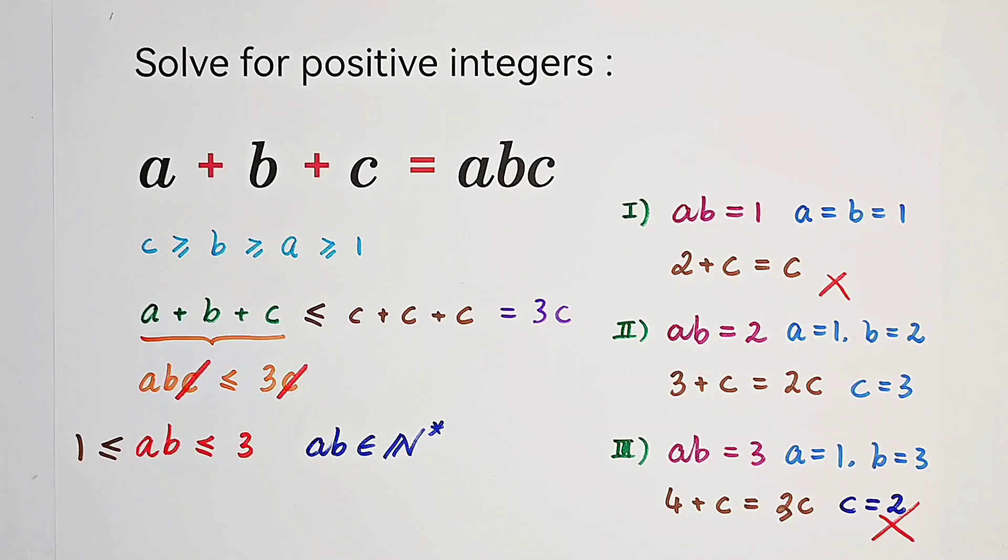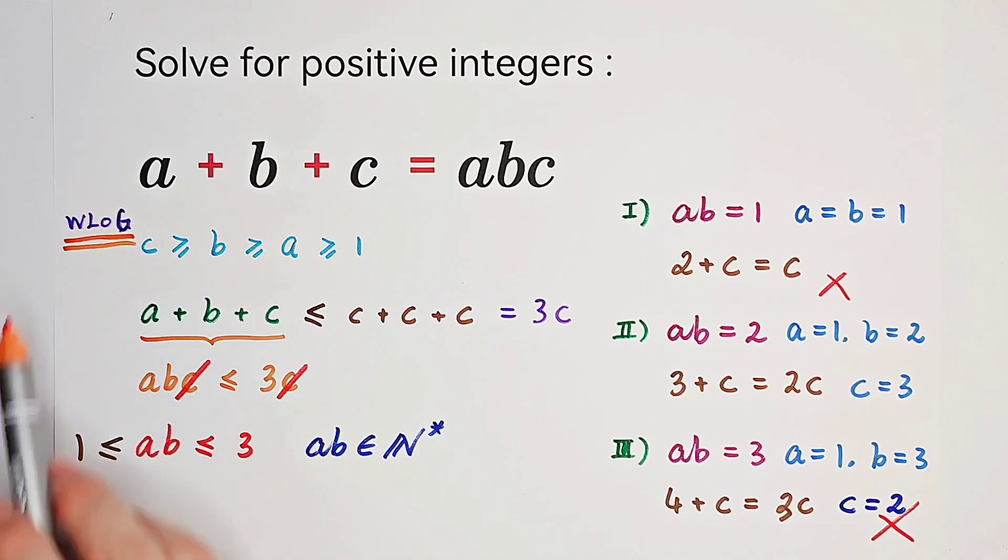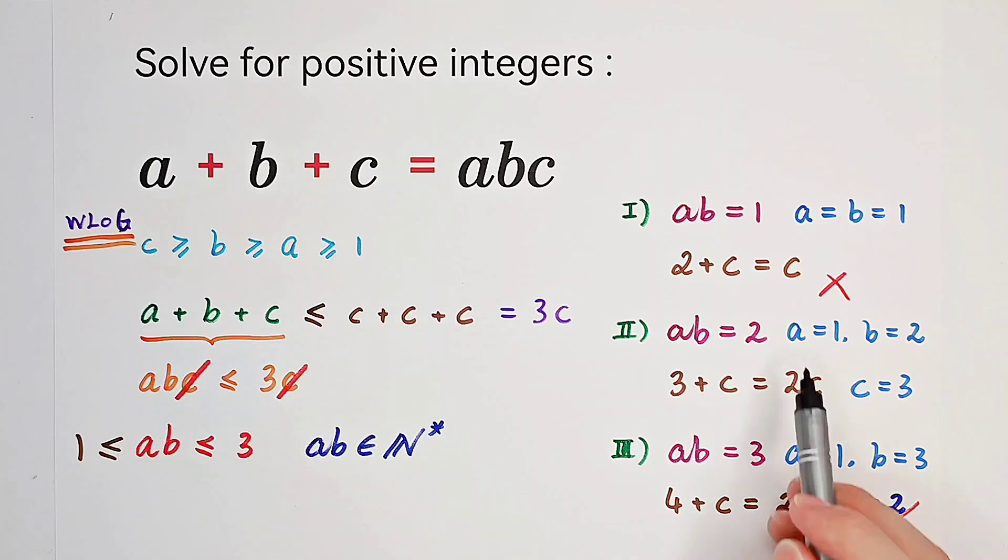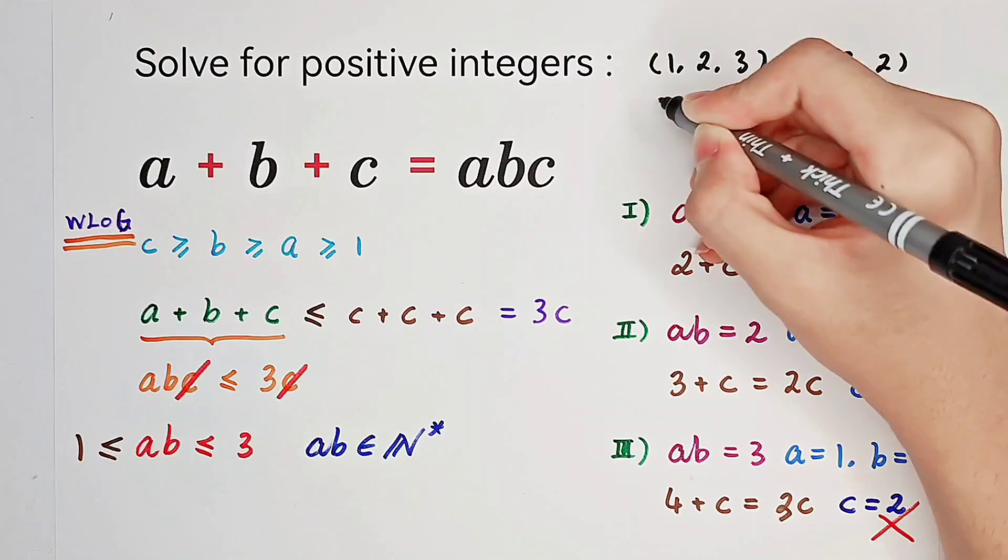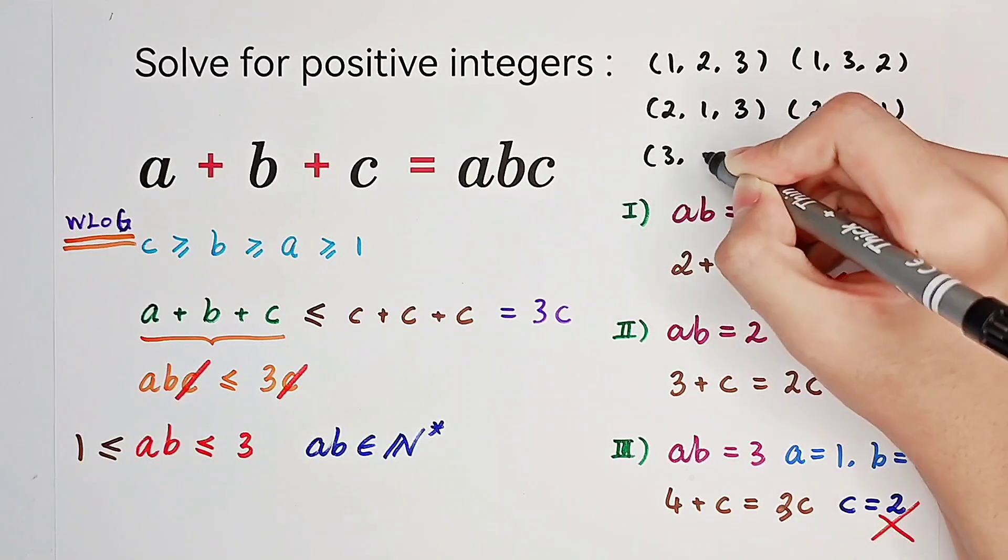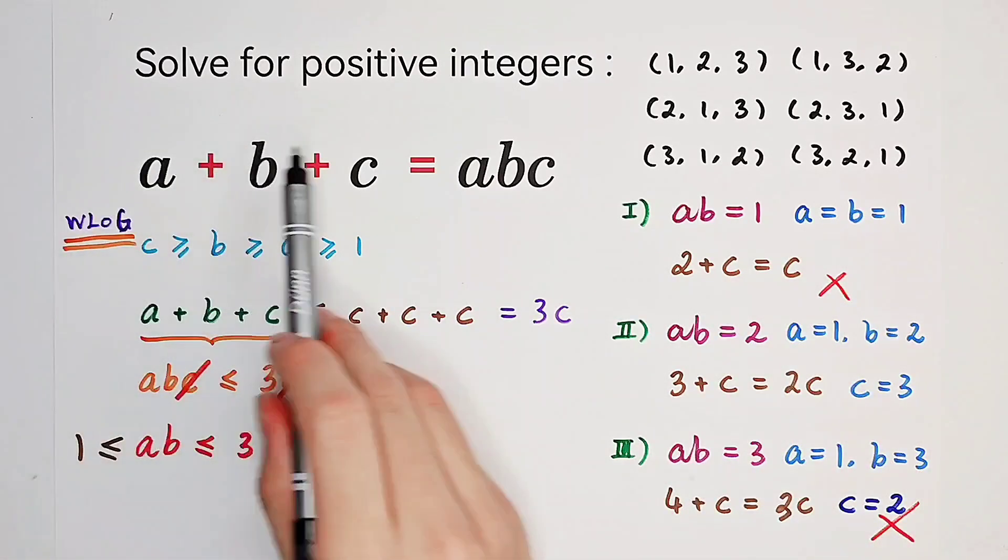So now, how many solution pairs do we have? Maybe we're going to say 1: A is 1, B is 2, C is 3. However, do not forget that we have without loss of generality. Because our original equation is symmetric, that means we have all the permutations of A, B, and C as solution pairs. Because the values differ from each other, we have 3 times 2 times 1 is 6 possibilities: 1-2-3, 1-3-2, 2-1-3, 2-3-1, 3-1-2, and 3-2-1. They're all our solution pairs.